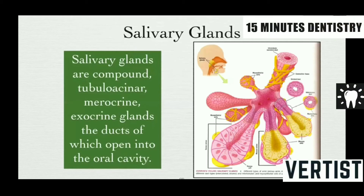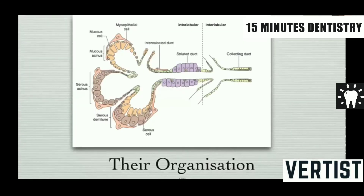Salivary glands are compound tubuloalveolar, merocrine, exocrine glands. Exocrine glands are where the secretion is thrown out through a ductal system. The tubuloalveolar pattern refers to both tubular and acinar arrangements, and it is a multi-lobular ductal system. This is their overall organization.